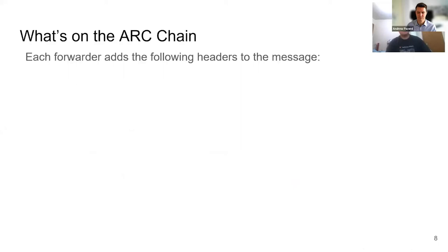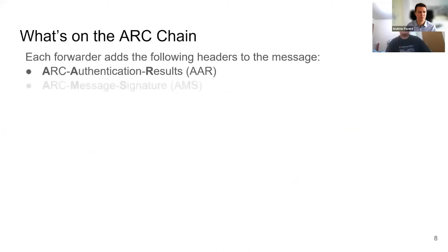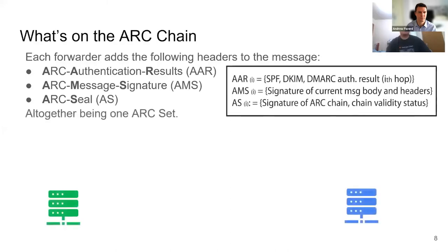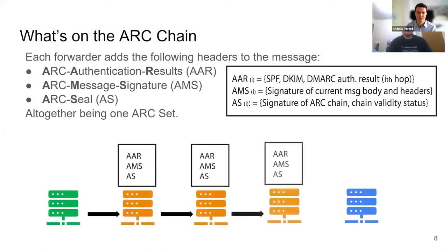So how does ARC work and what does it provide? There are three headers that each forwarder would add into the email message. First, ARC Authentication Results, which documents all authentication conclusions of itself. Second, ARC Message Signature, which works similarly to DKIM and signs important email headers and the email body. Finally, the ARC Seal, which signs the whole chain including all ARC headers generated by the forwarder and all previous ones. These three headers together are called one ARC set from one forwarder. With ARC, every forwarder on the chain can review previous results and document its own onto the chain, and the chain's integrity is protected by ARC seals signed by each forwarder.